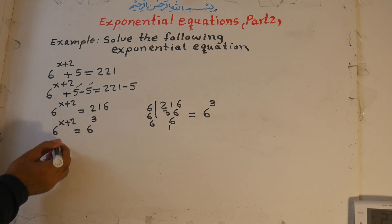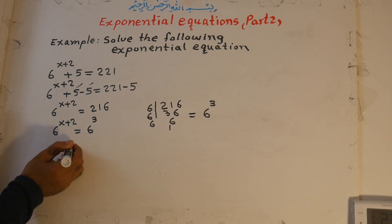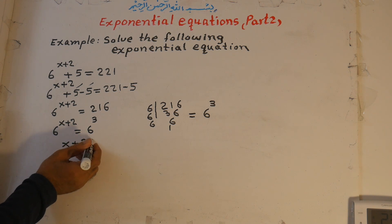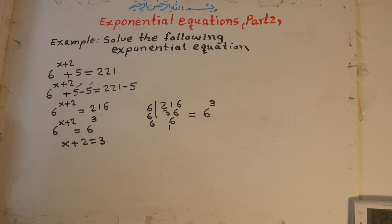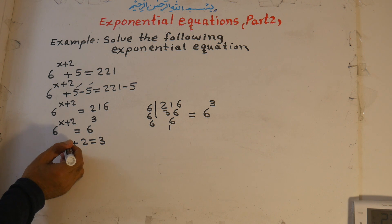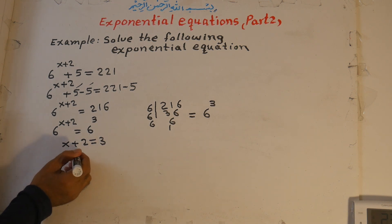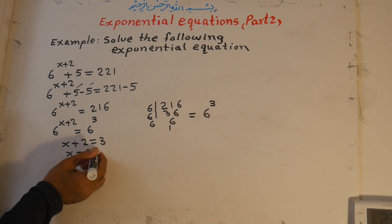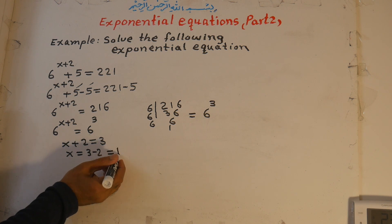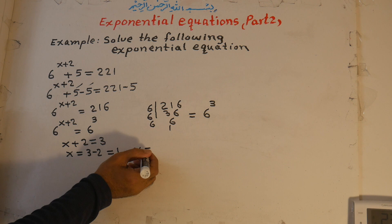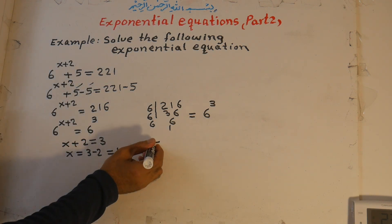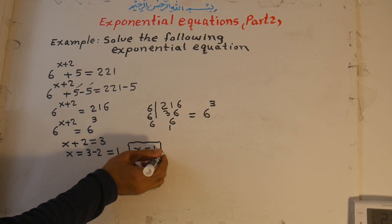Now both bases are equal to 6, so we can set the exponents equal: x plus 2 equals 3. If the bases were not equal, we could not solve the equation this way. This is now a first-order equation. We bring the 2 to the right side, so x equals 3 minus 2, which equals 1. The answer for x in this exponential equation is 1.